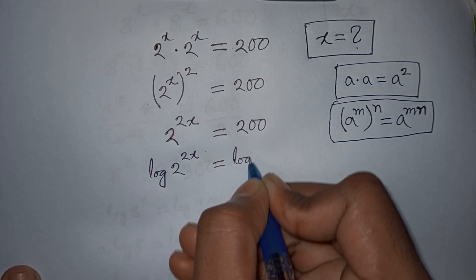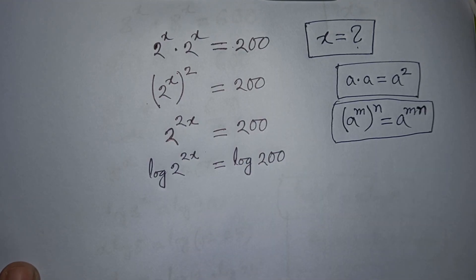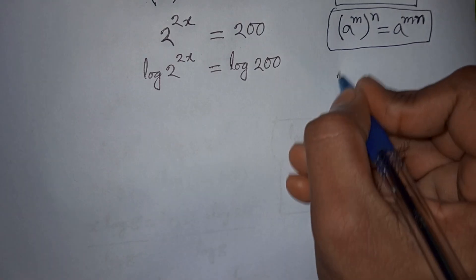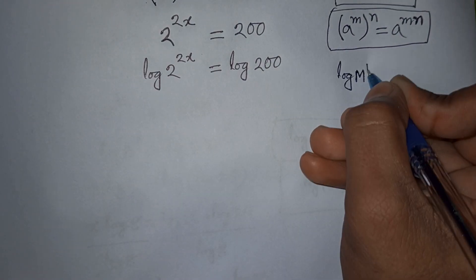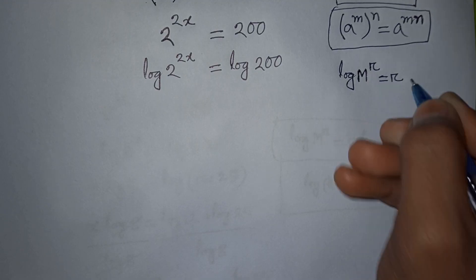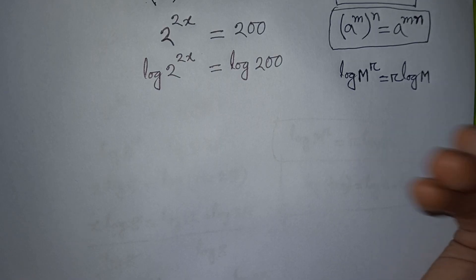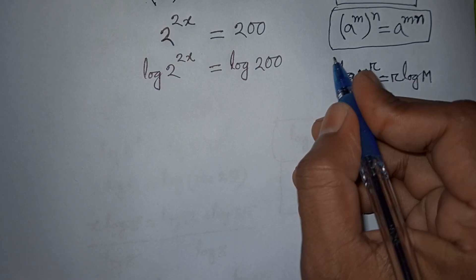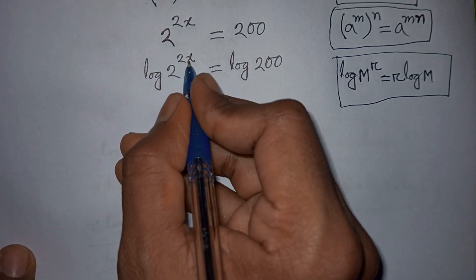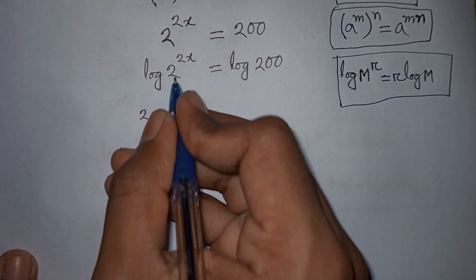Log of 2^(2x) equals log of 200. Now here we apply the rule that log(m^r) is equal to r·log(m) — this power r moves to the front — so this power 2x will move to the front and it will be 2x·log 2.